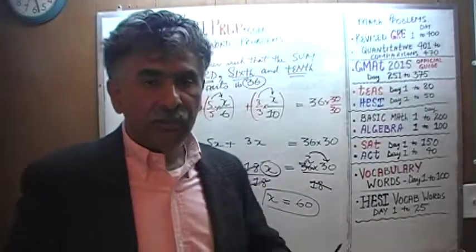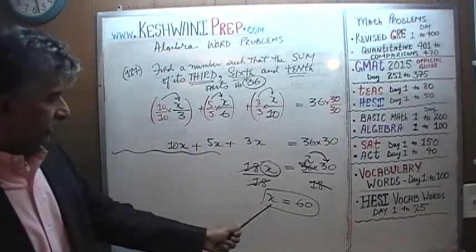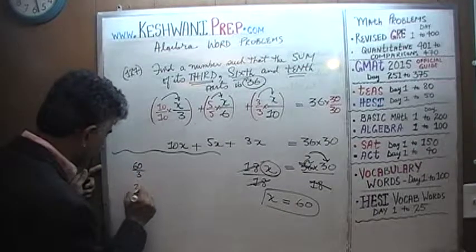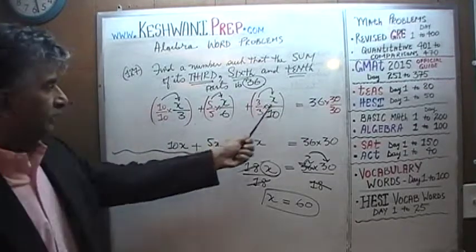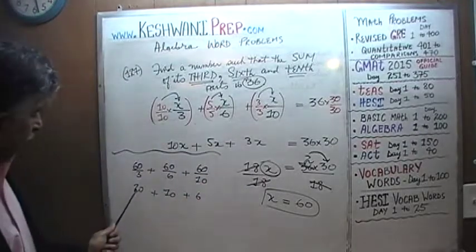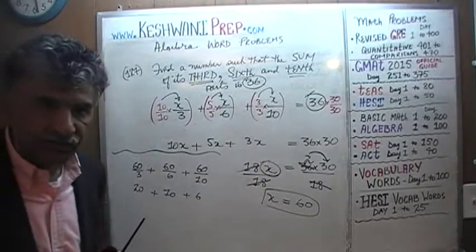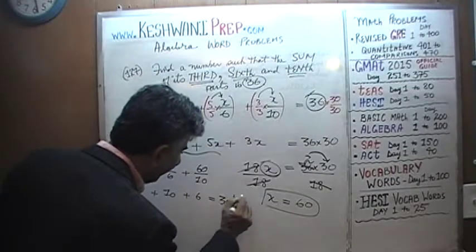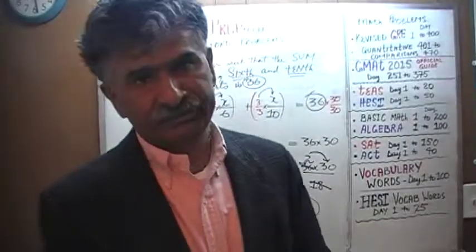We need to verify our answer, as always — it only takes five seconds. We are claiming the unknown quantity is 60. A third of 60 is 20, a sixth of 60 is 10, and a tenth of 60 is 6. Do 20, 10, and 6 add up to 36, as the problem tells us they should? 20 plus 10 is 30, and 30 plus 6 is 36. They do indeed add up to 36 — our answer is correct. Bye now.